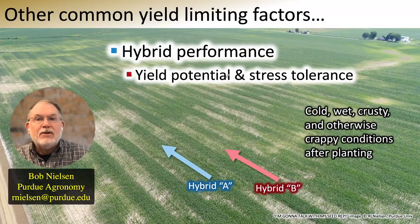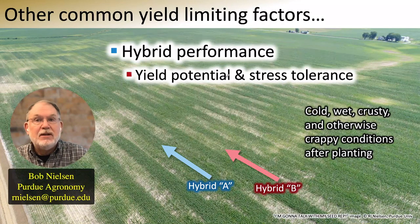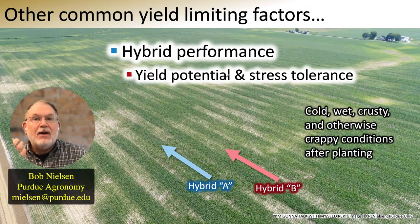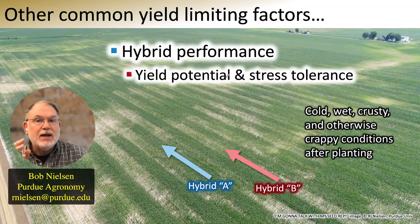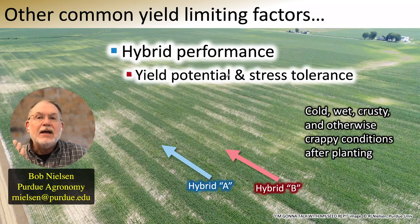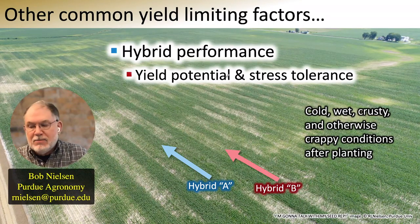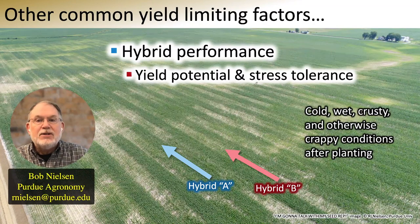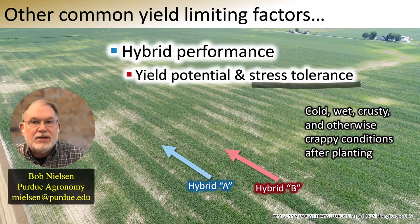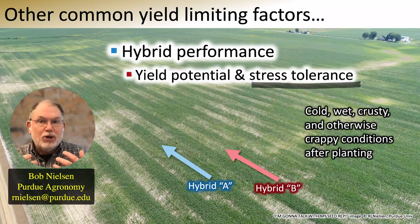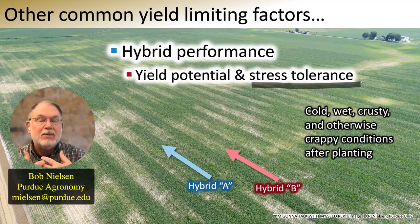Another common yield-limiting factor is hybrids and your ability to choose good hybrids. Today's hybrids all have pretty good yield potential; however, there's still variability among hybrids for that genetic yield potential. As we go about selecting hybrids, we want to identify hybrids that have good genetic yield potential. Just as importantly, we should be choosing hybrids with good stress tolerance, which is often a genetic characteristic involving a host of different traits that enable a hybrid to be more tolerant to stress.